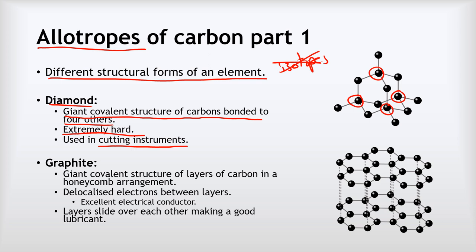We also have graphite. Now graphite is the most common allotrope of carbon and it has this giant covalent structure of layers of carbon in a honeycomb arrangement. So we can see there's one layer there and there's one layer there as well.